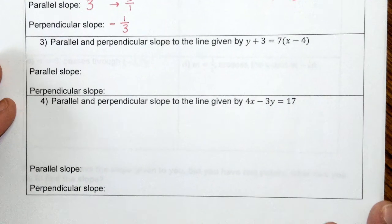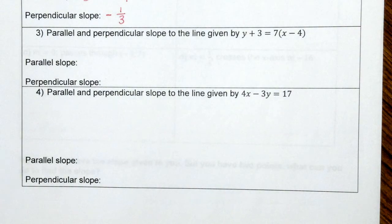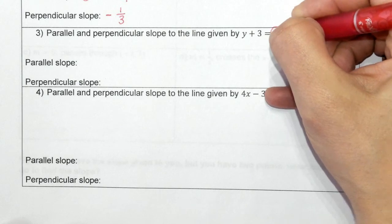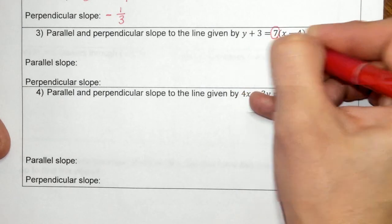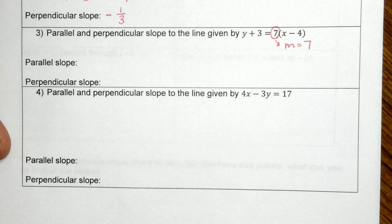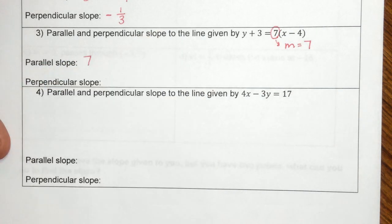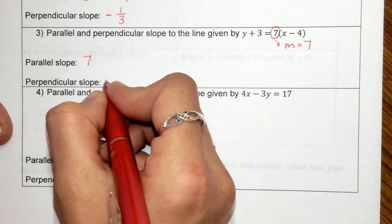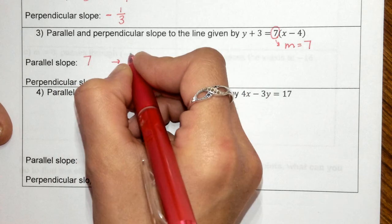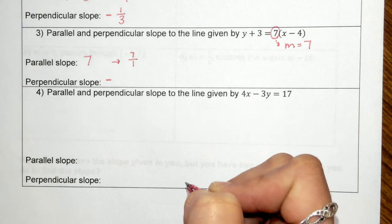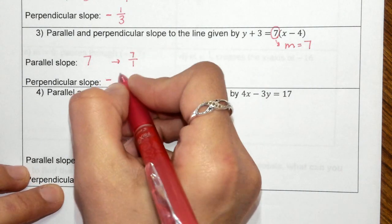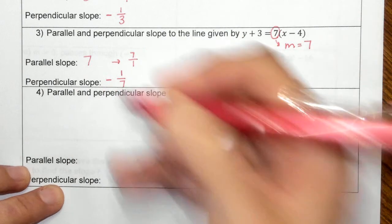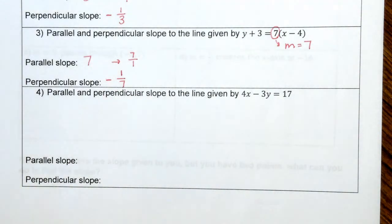Number 3 is given in point-slope form. We have our slope right here. Y minus Y1 equals M parentheses X minus X1. So the M right here, this is our straight-up slope. Don't have to do anything to solve it, we just find it. Our parallel slope is exactly the same, 7. Your perpendicular, we went from positive, so we need to change this to negative. We need to remember a whole number, 7 over 1, is a fraction. We're going to flip that fraction, so the 1 goes to the top and the 7 goes to the bottom, and there is our perpendicular slope, negative 1/7.